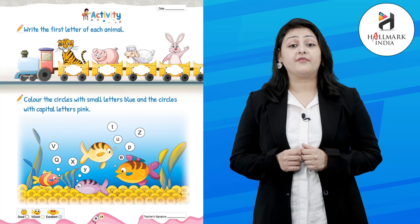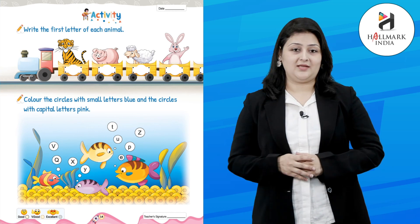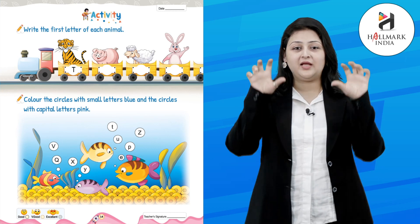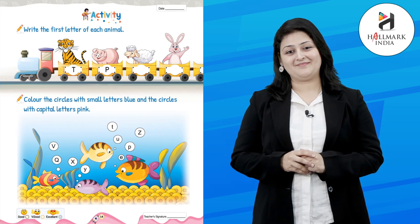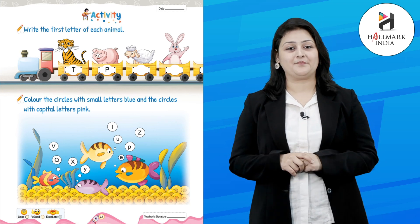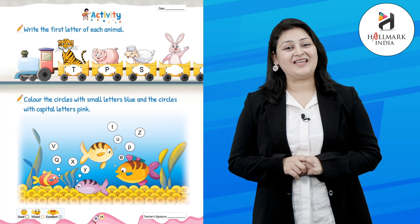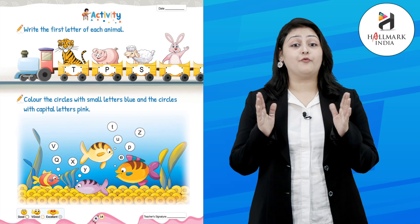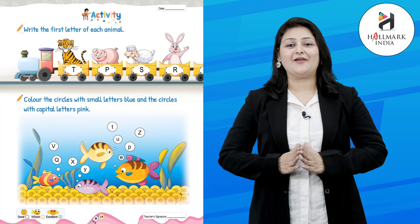Kids, let's do an activity. We need to write the first letter of each animal. The first letter is T — T for tiger. The second letter is P — P for pig. The third letter is S — S for sheep. And the fourth letter is R — R for rabbit.